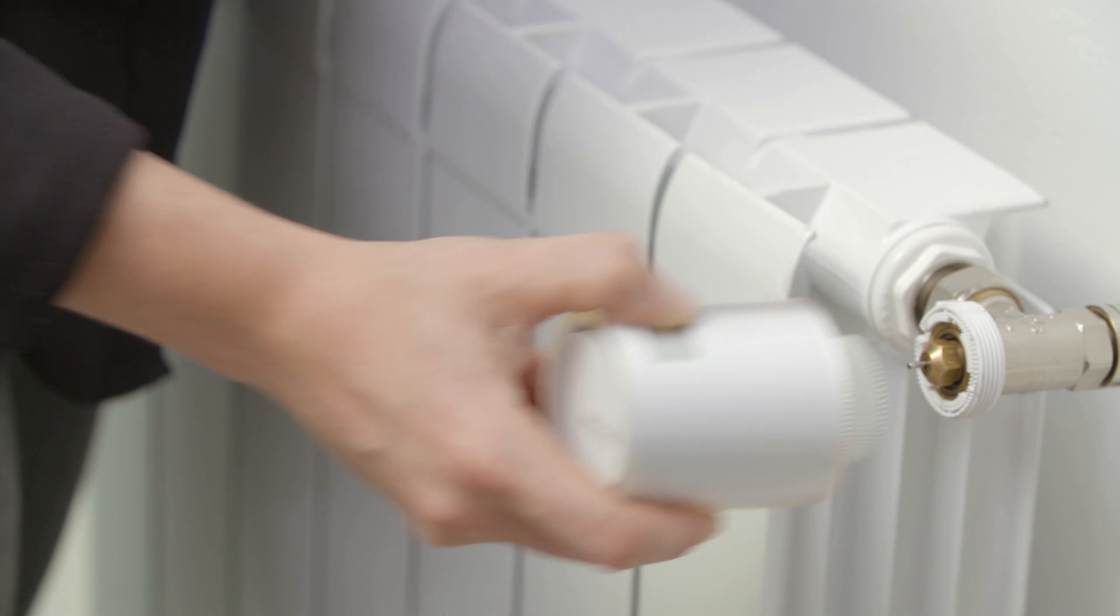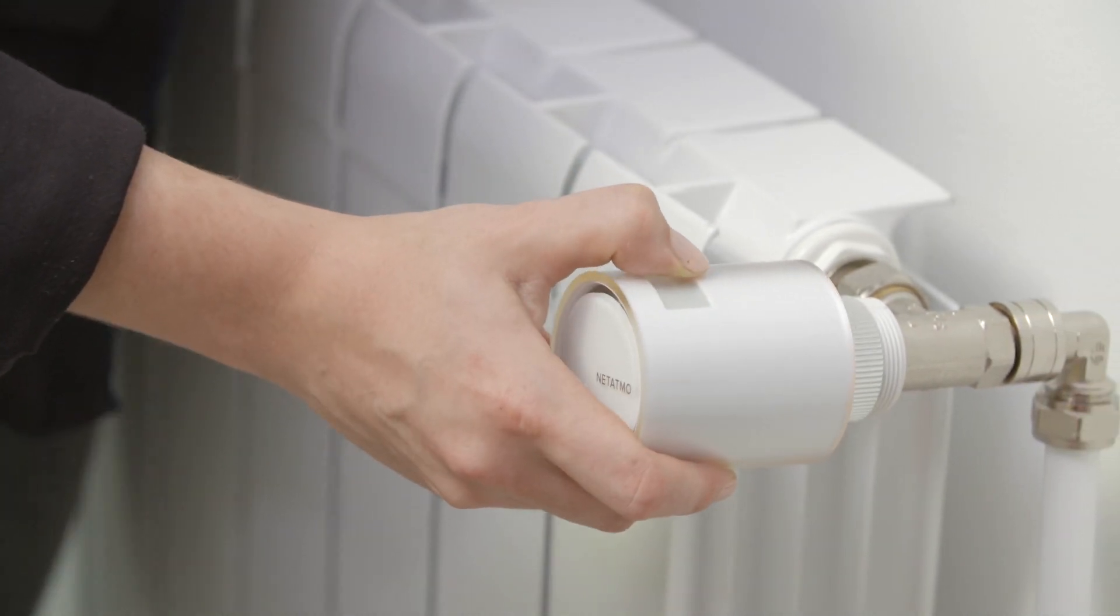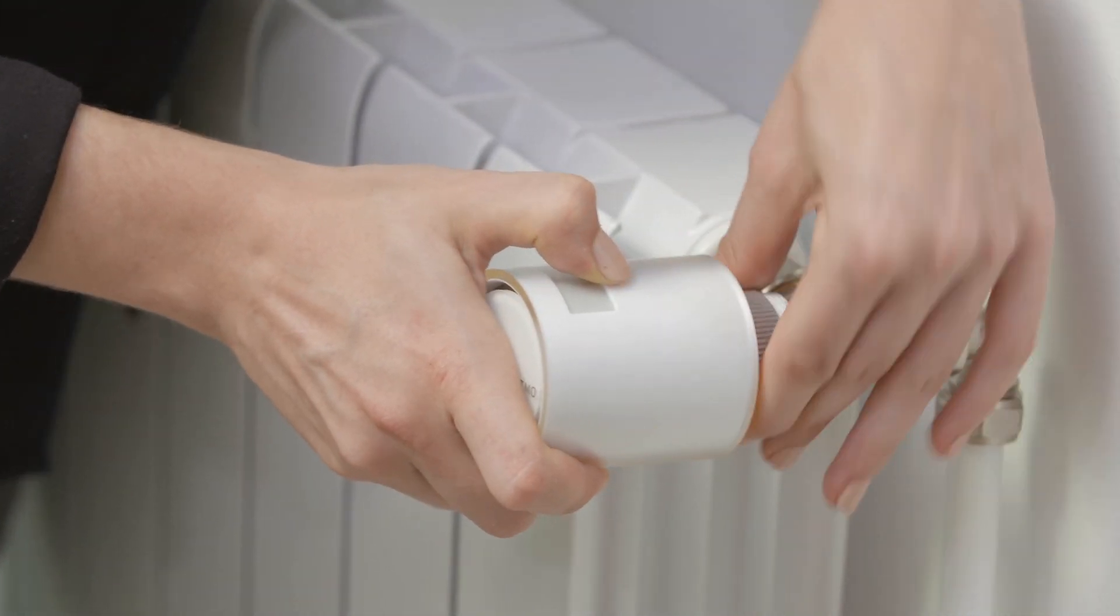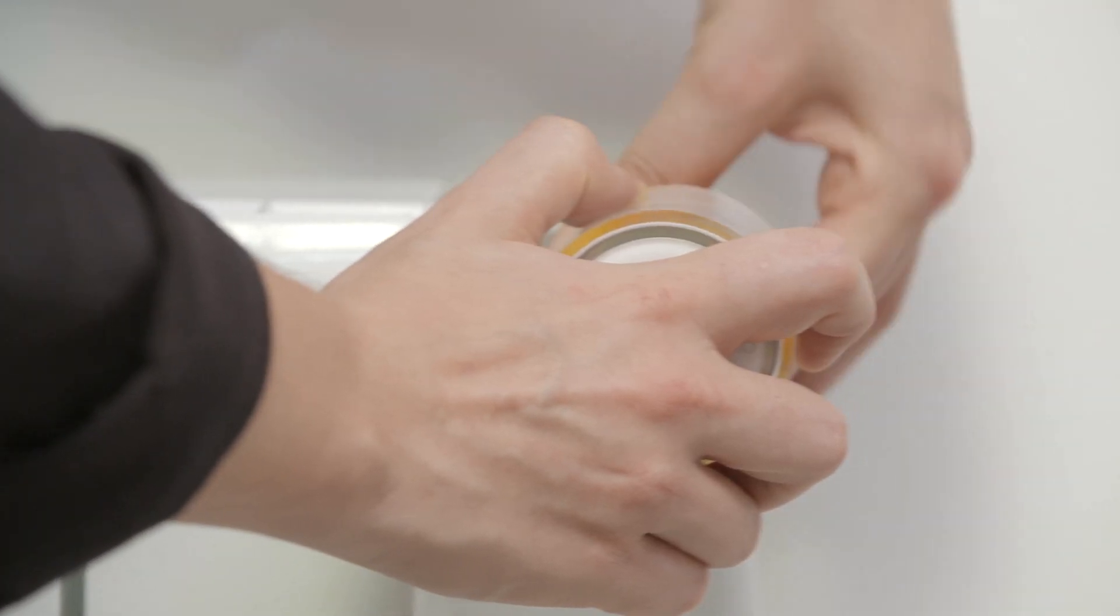Hold the Netatmo smart radiator valve with the screen facing out. Push the valve into the radiator and rotate the securing ring until the valve is secured.